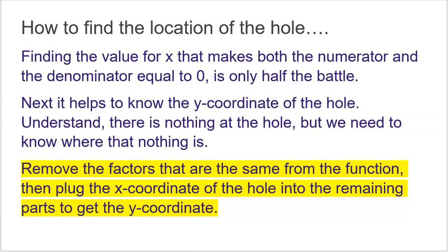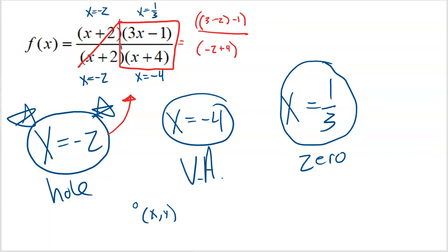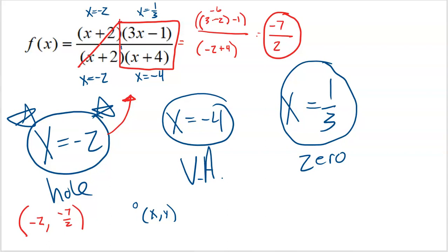To find the corresponding y-coordinate of the hole, remove the common factors from both the numerator and denominator. What's left is 3x minus 1 and x plus 4. Plug negative 2 back into those factors: 3 times negative 2 minus 1 in the numerator, and negative 2 plus 4 in the denominator. That gives negative 6 minus 1, which is negative 7, over 2. So the hole is officially located at negative 2 comma negative seven halves, or negative 3.5. That's not overly complicated.